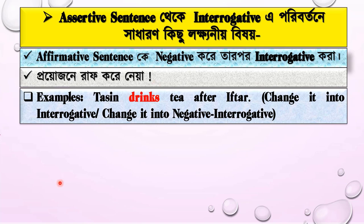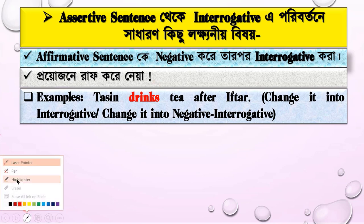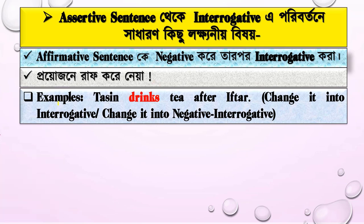Let's look at an example. Our example sentence is: 'Tassin drinks tea.' The task says: change it into interrogative, or change it into negative interrogative.